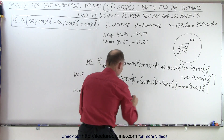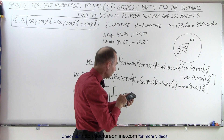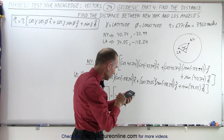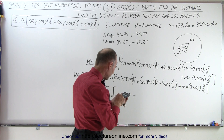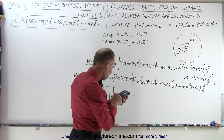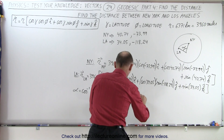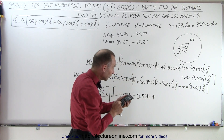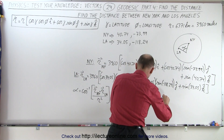Now I add the y-components: cosine of 40.74 times the sine of minus 73.99, multiplied by cosine of 34.05 times the sine of minus 118.24, which gives plus 0.5316. Then I add the z-components: sine of 40.74 times sine of 34.05, which equals plus 0.3654.